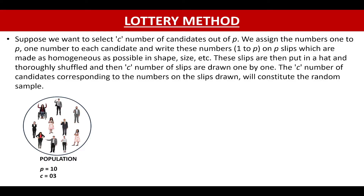Now coming to the lottery method. Suppose we want to select C number of candidates from a population size of P. We will assign numbers from 1 to P to each candidate and write their numbers on P number of slips. We then shuffle these slips in a hat or a bag and randomly draw C number of slips one by one. The candidates corresponding to the number on the slip drawn will form part of the random sample.